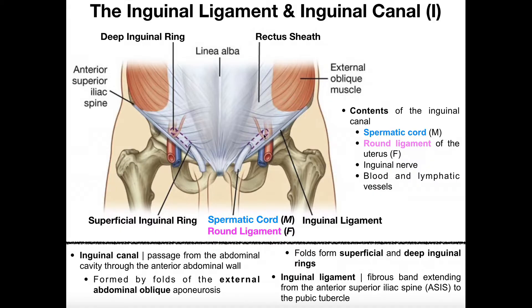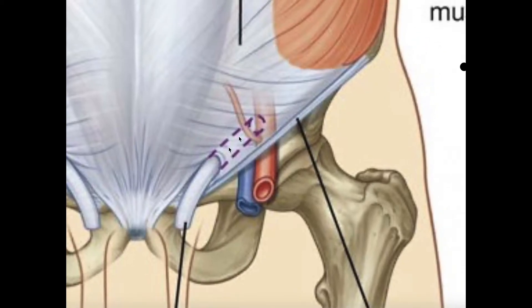In order to form the passageway, you have to have some folding of the aponeurosis. It turns out that the folds that allow this passageway to form are specifically folds of the external abdominal oblique aponeurosis. Now, there are actually two rings here — a deep inguinal ring and a superficial inguinal ring where the tubing is emerging anteriorly. The purple dotted line connecting the two rings is the passageway — the inguinal canal. As you emerge posteriorly from the deep ring, that takes you into the abdominal cavity.